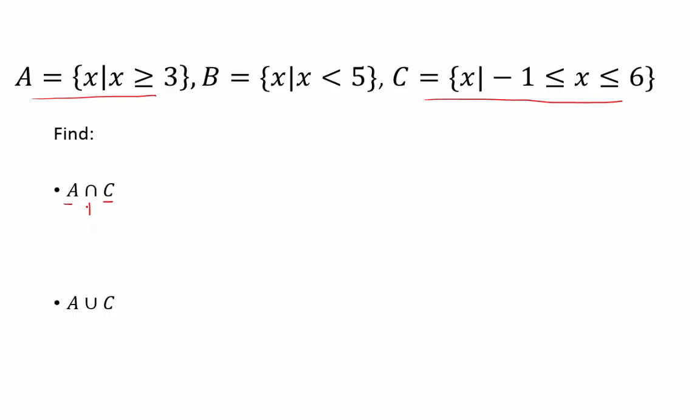And what was this set operation here? Intersection, right? And when you see intersection, you think of where they overlap, what they have in common. And we also associate that with the word and. Whatever is in both A and C is going to be in A intersect C.